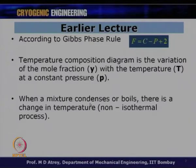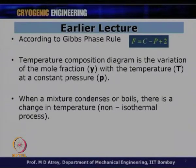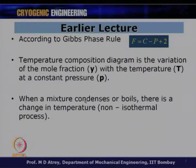When a mixture condenses or boils — that is, when a change of phase happens — there is a change in temperature, and this is a non-isothermal process. This is different from a single-component system, where the temperature remains constant during condensation and boiling. However, for a mixture, as we saw in the temperature-mole fraction diagram, during phase change the temperature decreases, making the process of condensation or boiling non-isothermal — a very important deviation from a single-component system.